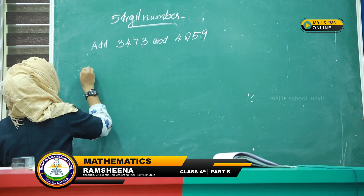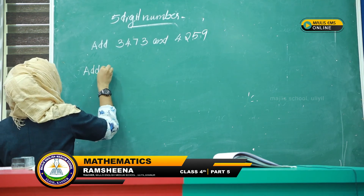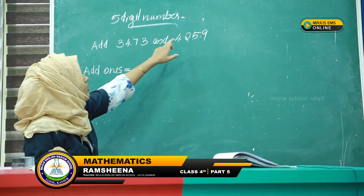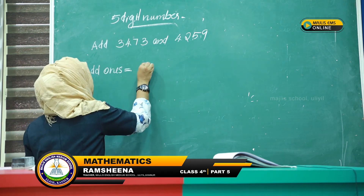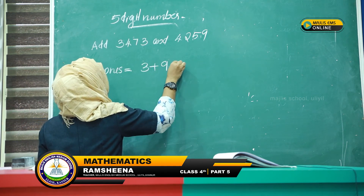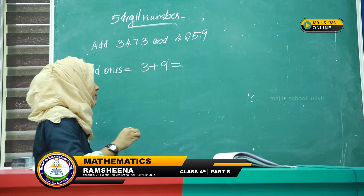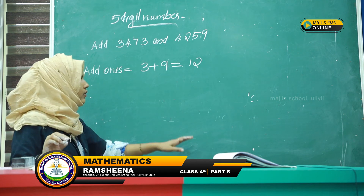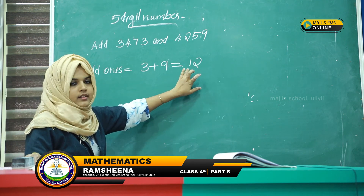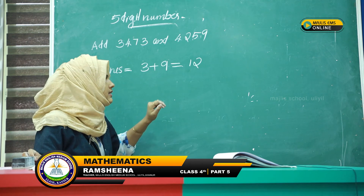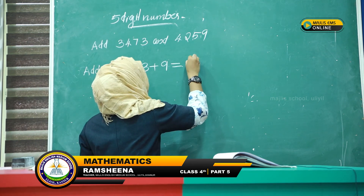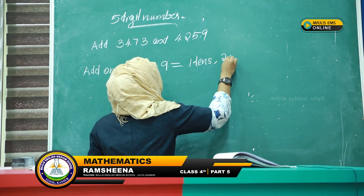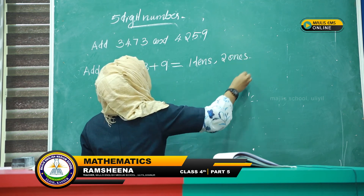First we add ones. The ones digits are 3 and 9. 3 plus 9 equals 12. So we get 2 ones and 1 ten.